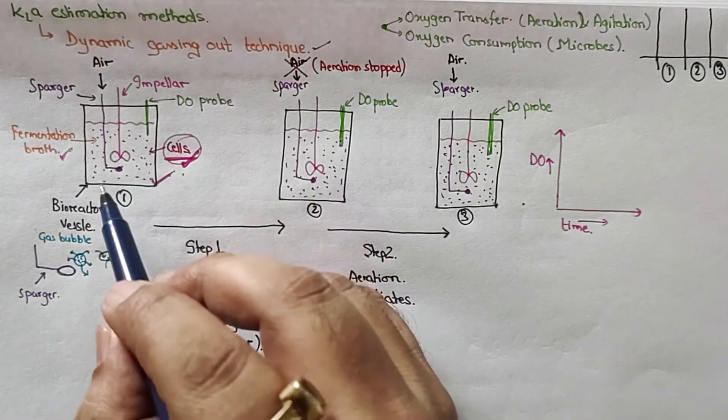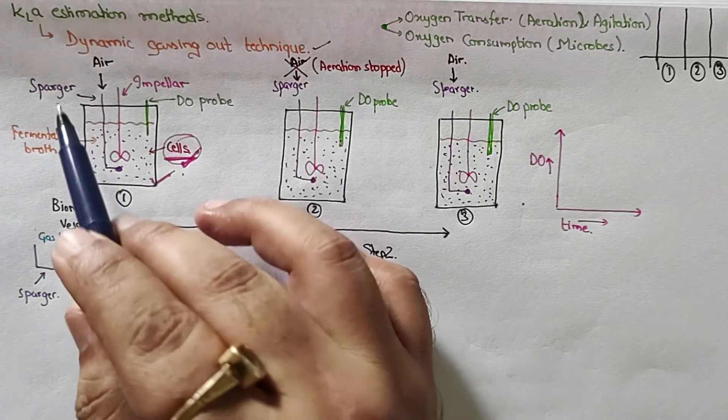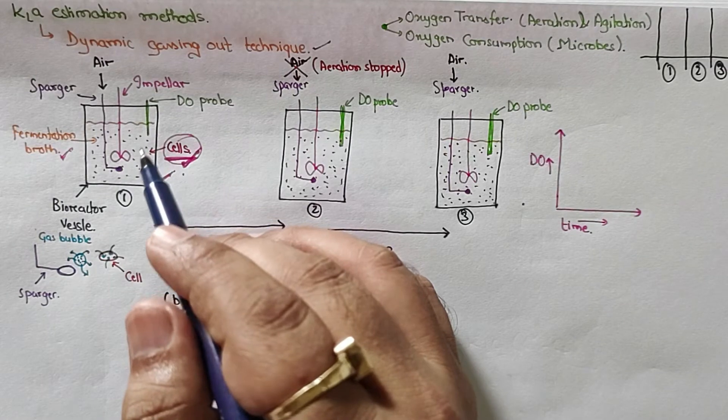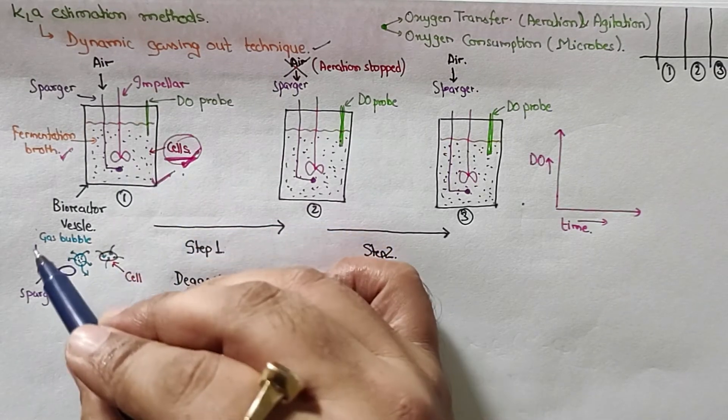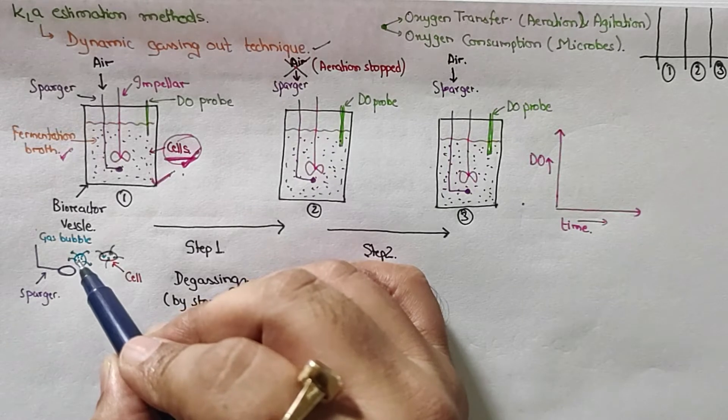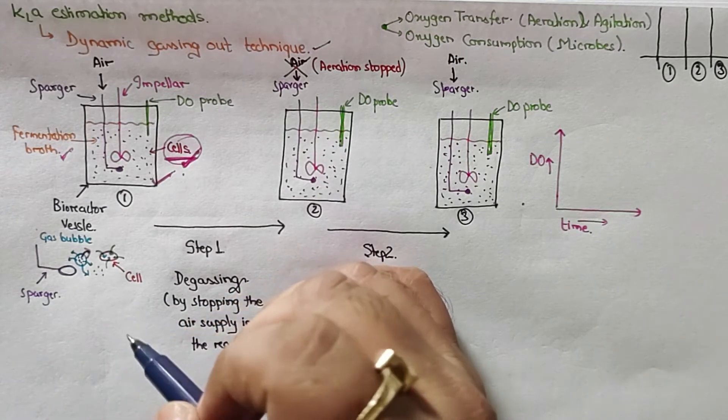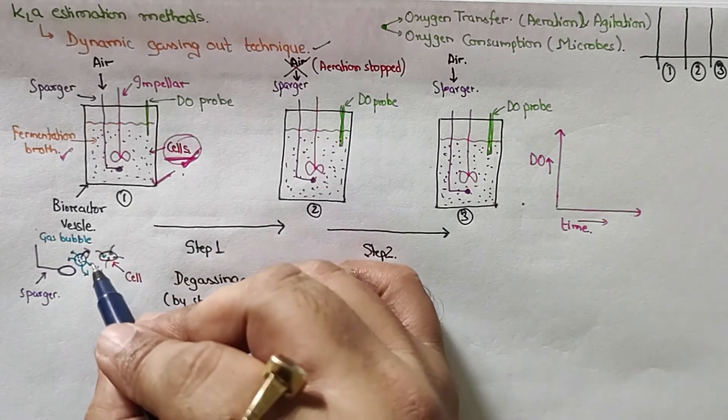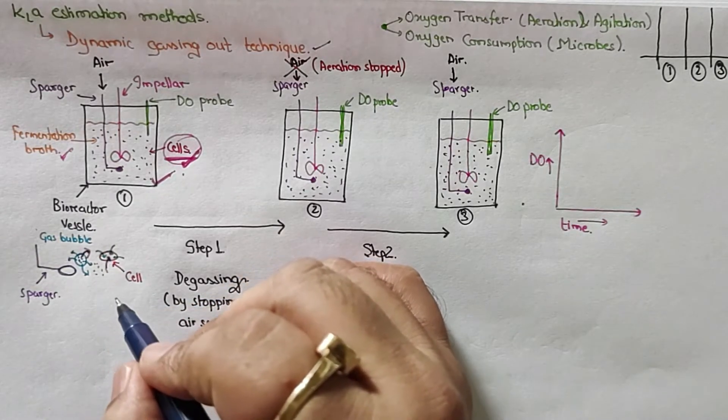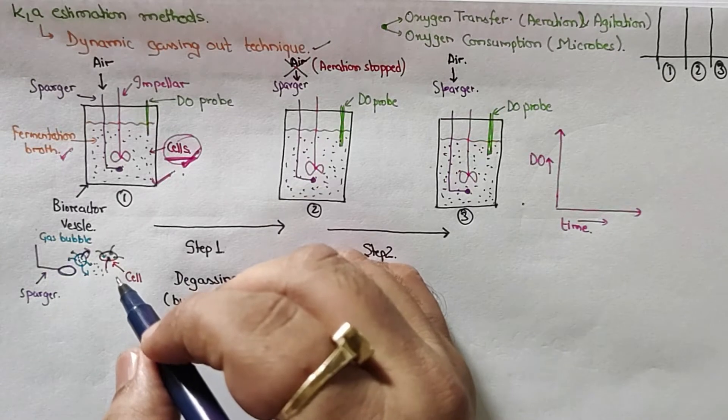Initially, because it is a fermentation broth and the cells are there, air supply is turned on. So cells will be utilizing that air for their growth. From the spargers the oxygen bubble is coming out, delivering the oxygen or air into the fermentation media. From the fermentation media, the dissolved oxygen is being taken up by the cells and they are utilizing it for their metabolic and catabolic purposes.